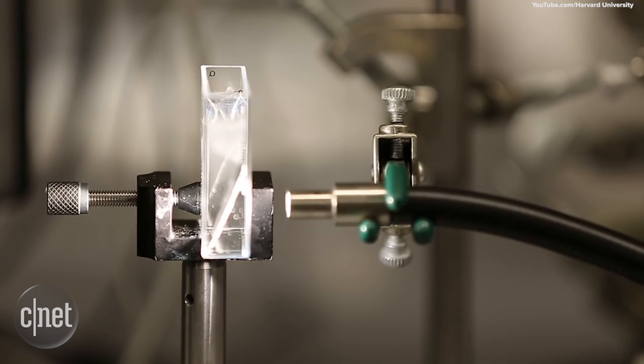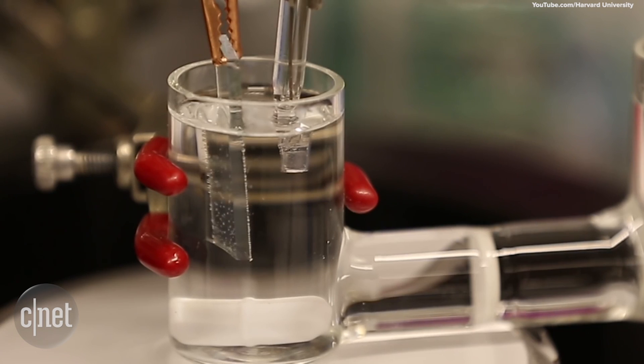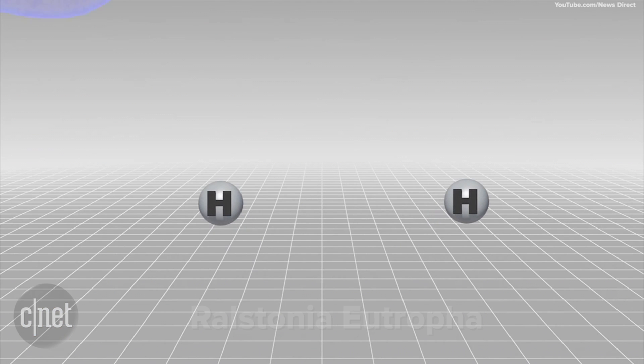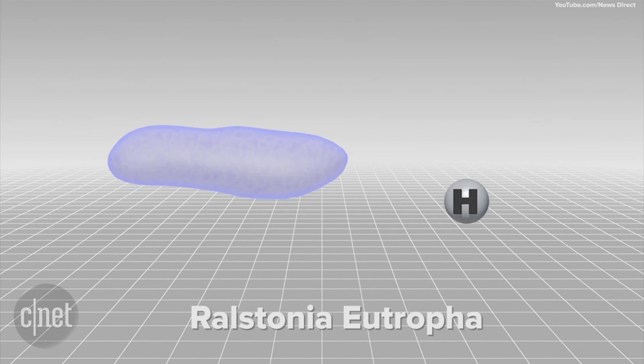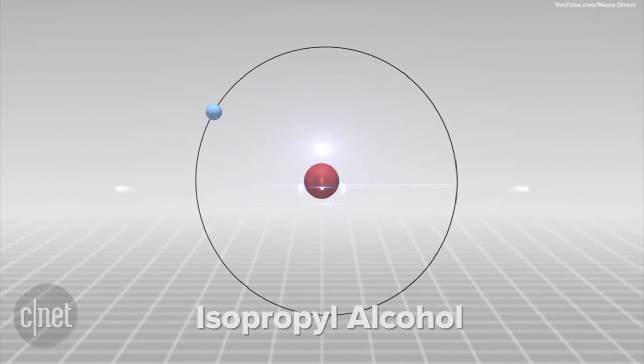You can then use the hydrogen right out of the leaf for fuel or convert the hydrogen using an engineered bacteria which devours the hydrogen molecules and leaves behind isopropyl alcohol.